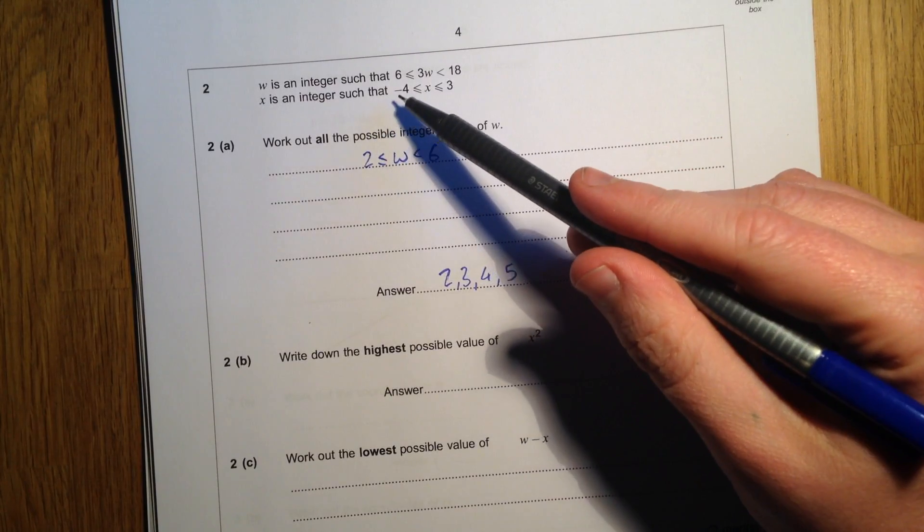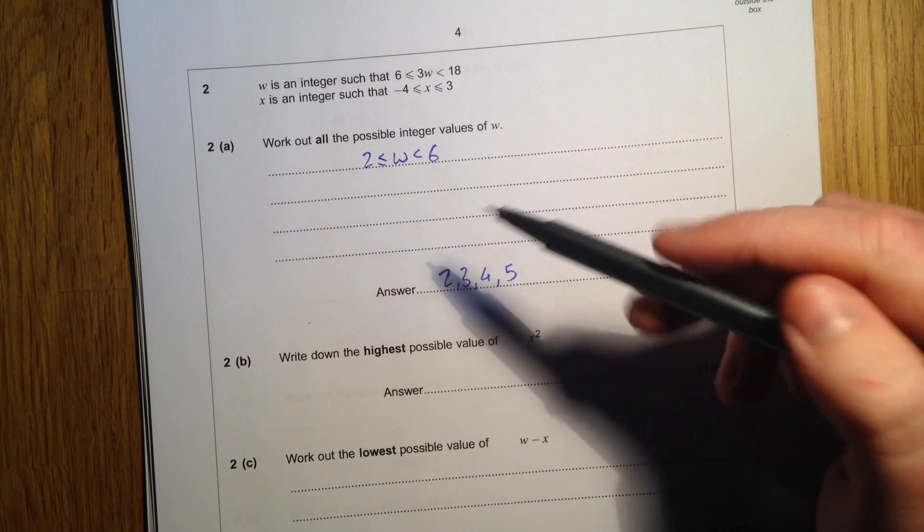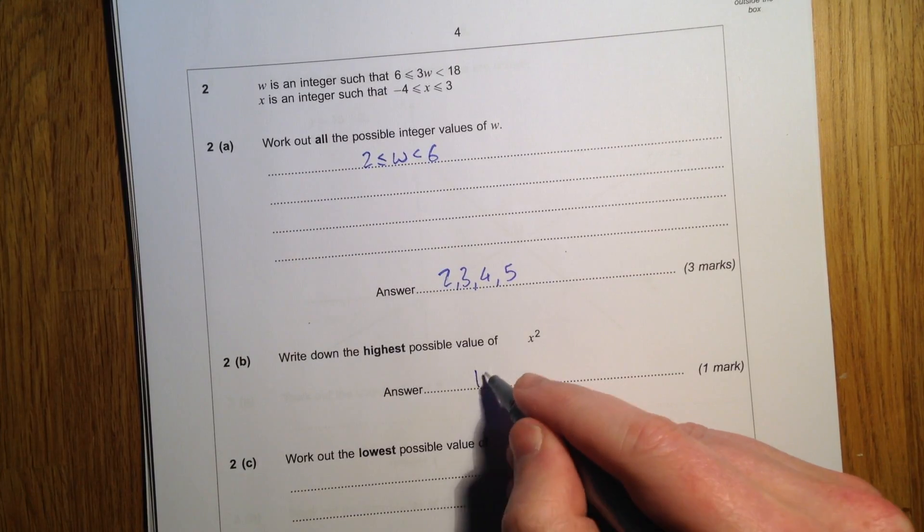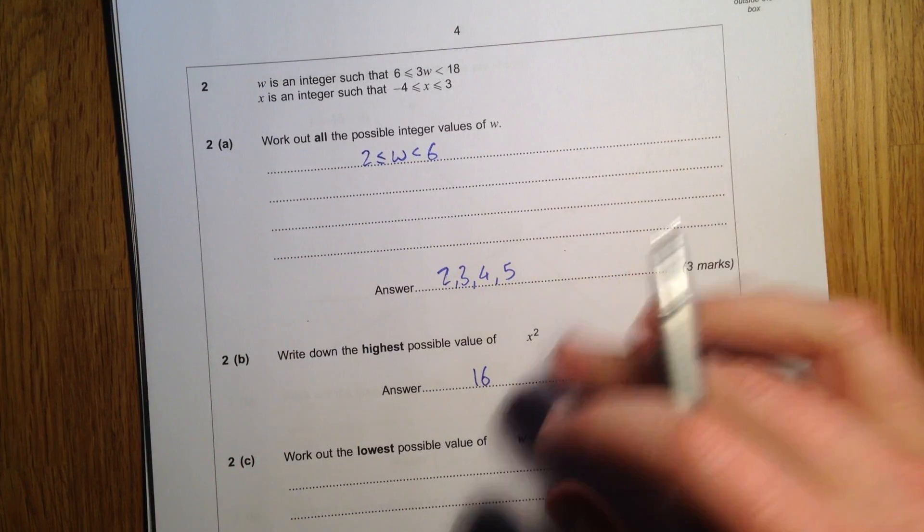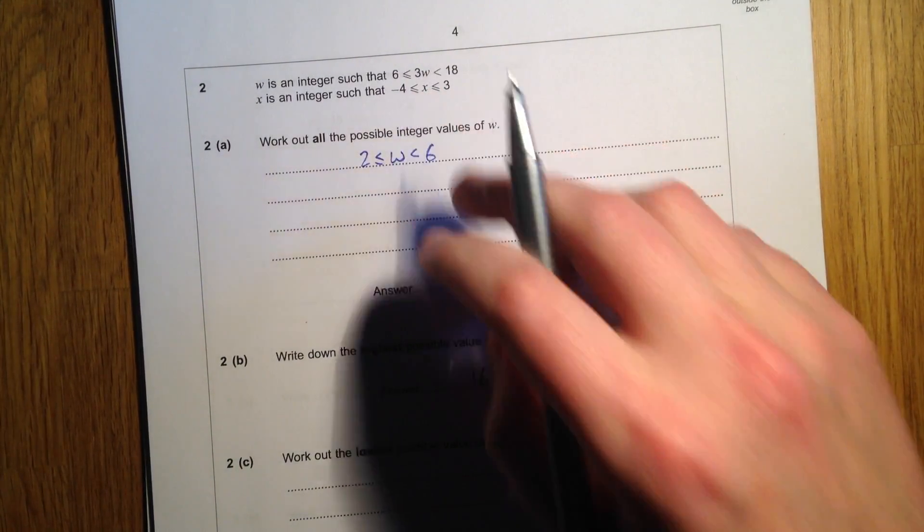3 squared is 9, but I know that negative 4 when we square it is 16. So we get a higher number from the negative than we do from the positive.